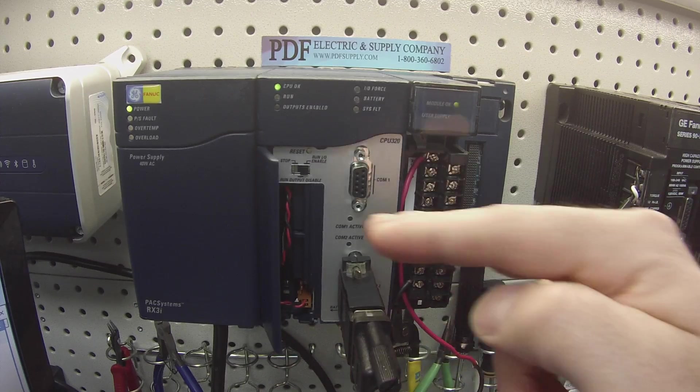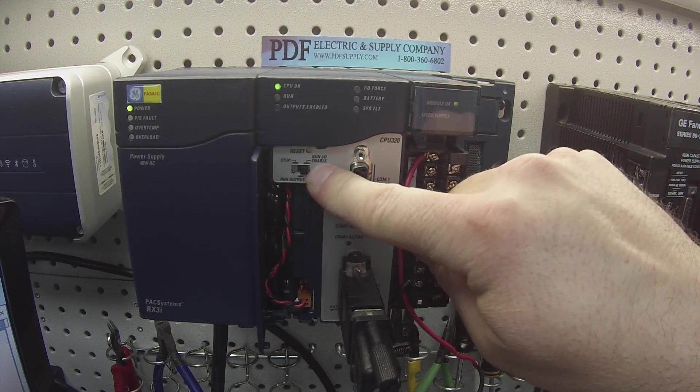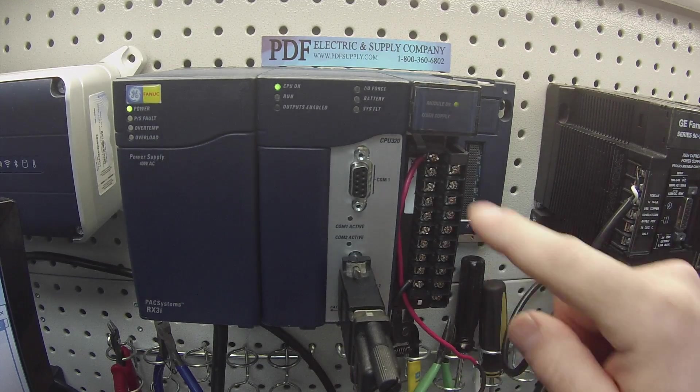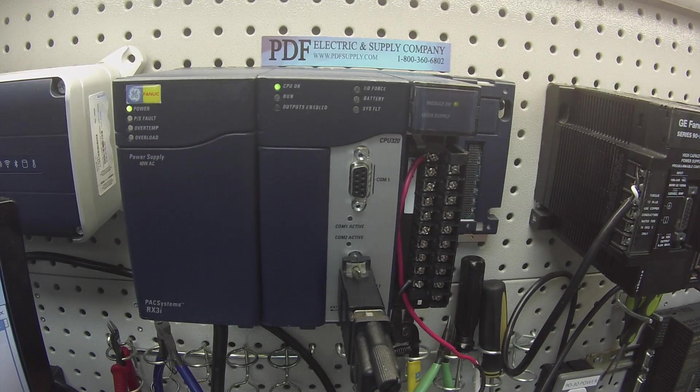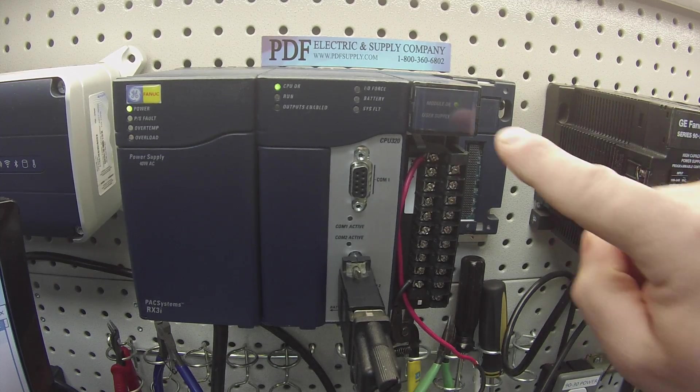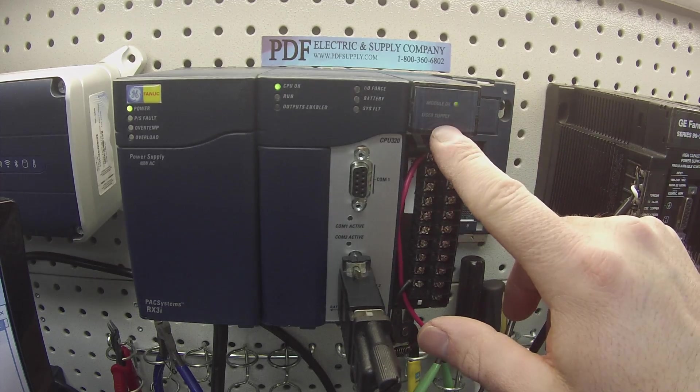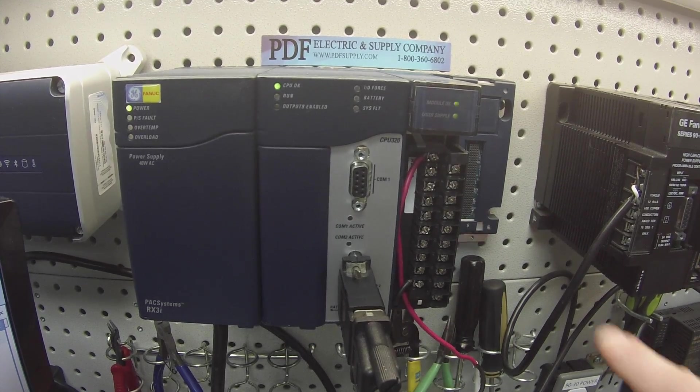One thing that you guys want to make sure is that your switch is in the far right position for the run enabled on your processor so that when you go into run mode, the processor enables the outputs so that we can use the card. The other thing is I'm going to power up my power supply. We should have an LED that turns on next to where it says power supply. We have that now.